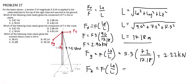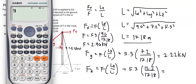And to solve for fz, we have 5.3 times lz (12.3) divided by L (17.18), which gives fz = 3.79 kN.